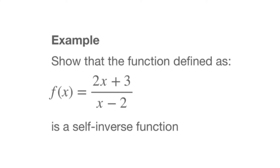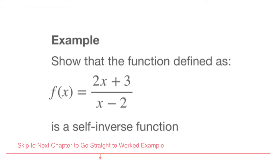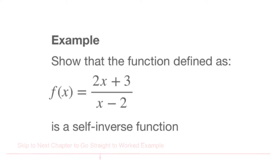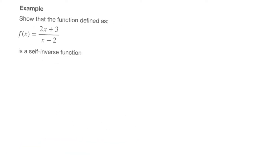In this video, we learn about self-inverse functions. In a couple of minutes, I'm going to be working through the example we see here, in which we're told to show that the function defined as f of x, which equals 2x plus 3 over x minus 2, is a self-inverse function. But before solving this example, let me spend a minute or so to actually explain what a self-inverse function is.